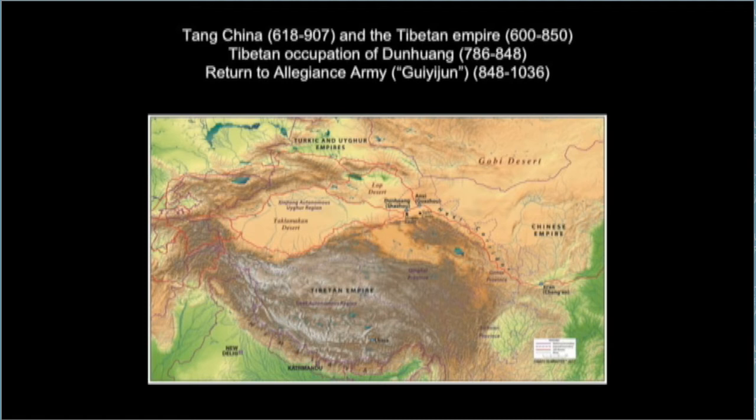Between 848 and 1036 marks the period of rule under the military governors of the Return to Allegiance Army, or the Guiyijun. It's important to keep in mind that this chronology is specific to Dunhuang. According to standard Chinese dynastic chronology, the Tibetan occupation of Dunhuang is called the Mid-Tang Dynasty, and the period during which the Return to Allegiance Army rules is called the Late Tang Dynasty. By using the terminology of Tibetan occupation or Return to Allegiance Army period, we're paying close attention to the particulars of the historical context.